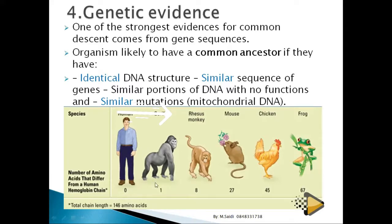Humans and chimpanzees have only 1% difference, meaning we are almost the same. Humans and monkeys have 8% difference — slightly more distant than chimpanzees. Humans and rats have 27% difference, meaning we diverged from rats a very long time ago.